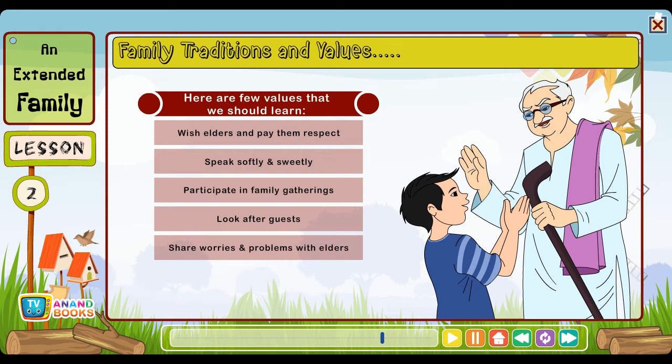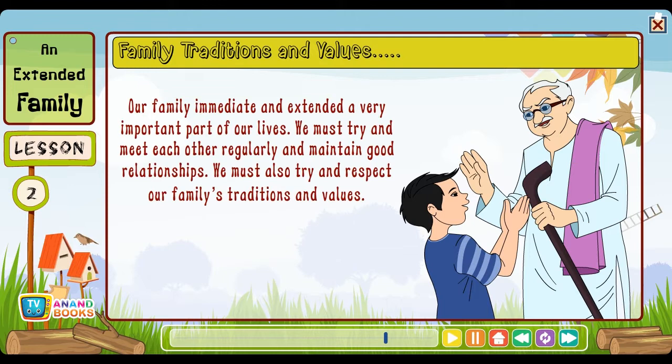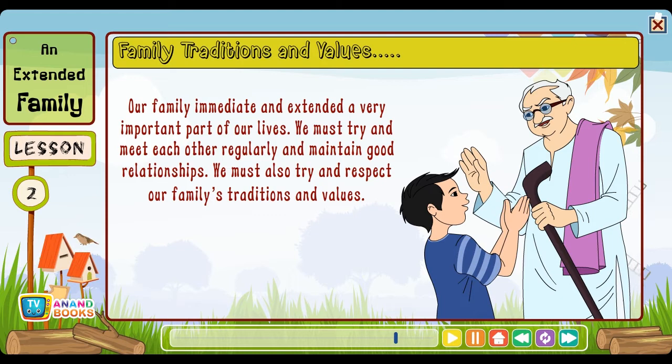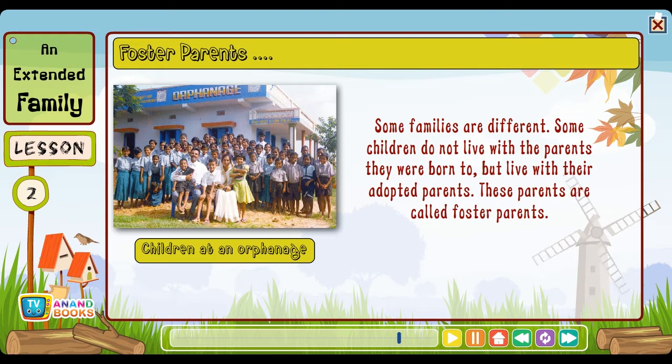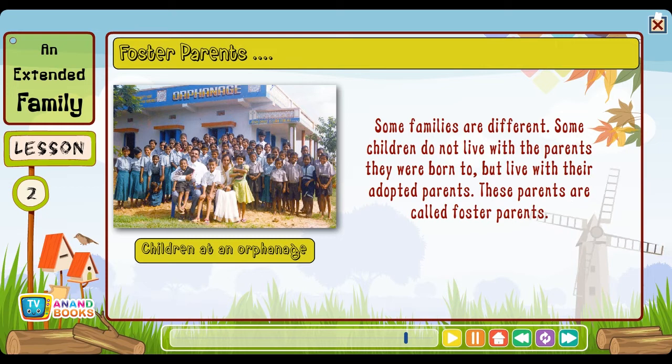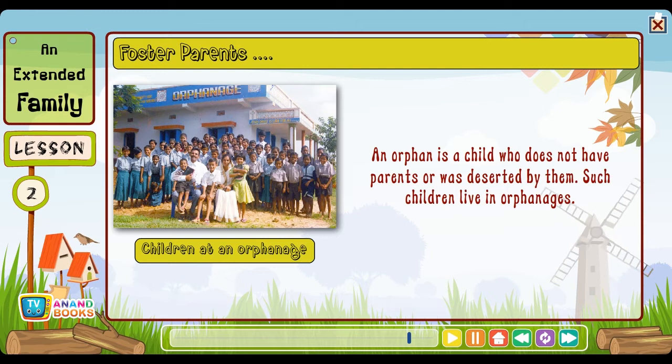Share worries and problems with elders and take their advice and guidance. Our family — both immediate and extended — is a very important part of our lives. We must try to meet each other regularly and maintain good relationships. We must also try to respect our family's traditions and values. Some families are different. Some children do not live with the parents they were born to, but live with their adopted parents. These parents are called foster parents. An orphan is a child who does not have parents or was deserted by them.